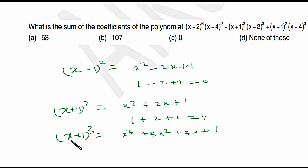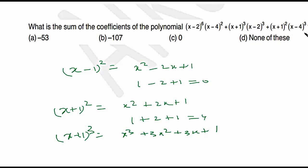Putting x = 1 in (x + 1)³ gives 2³ = 8 — the same result. So the sum of coefficients can be calculated simply by putting x = 1 in the entire expression. The problem becomes very easy with this logic.